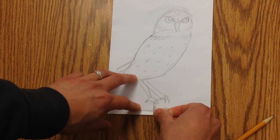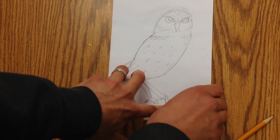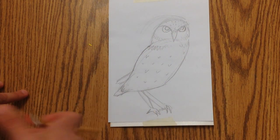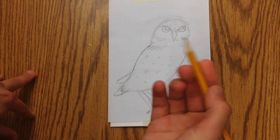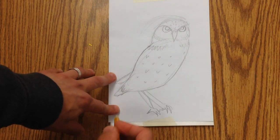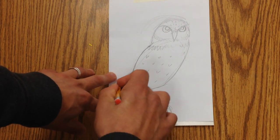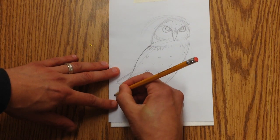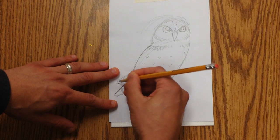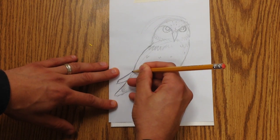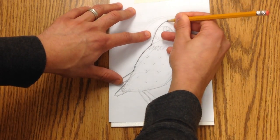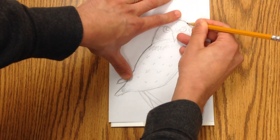Now for this first print, I'm not going to add all the details. I'm just going to go around the outside of my owl. I take a pencil and just lightly trace over the areas that are the outline of my owl. As I'm doing this, it's creating a little impression on the actual piece of styrofoam, scratching into it.